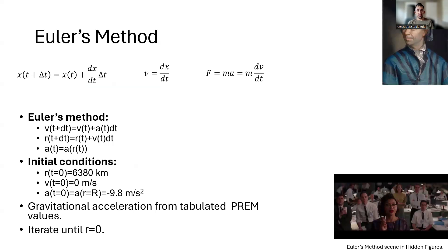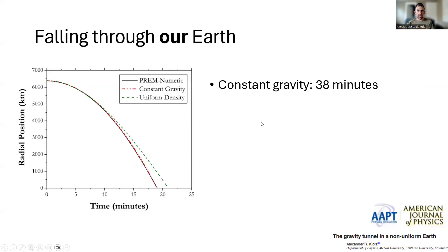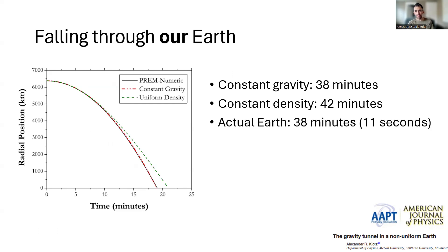So if we do the calculation, I'll just remind you of our different results. The high school version with constant gravity took 38 minutes. The more complex college version with constant density took 42 minutes. And if we use this realistic density profile, the answer we get is 38 minutes and 11 seconds. Now it turns out that the high school version was closer to being correct.